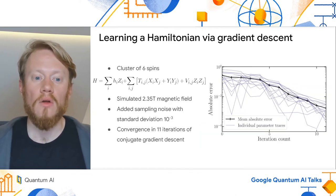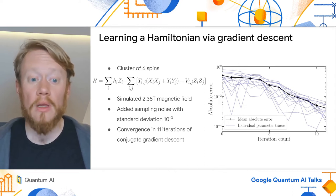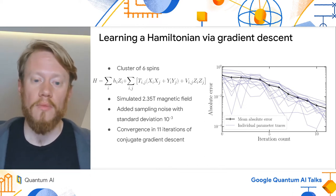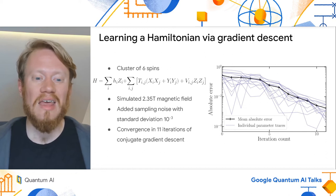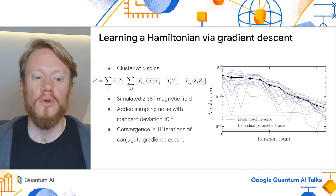To demonstrate that this works, we implemented Hamiltonian learning on a small six-spin cluster. Here, we learned using the conjugate gradient descent algorithm on a classically simulated dataset with simulated sampling noise of 10^-3 per term. Given this, the algorithm learns 12 couplings within 11 iterations to a total relative error of 0.2%, which seems reasonable to me.